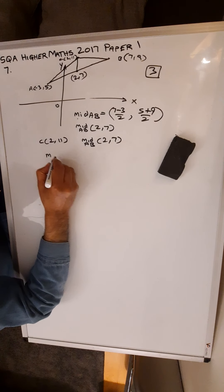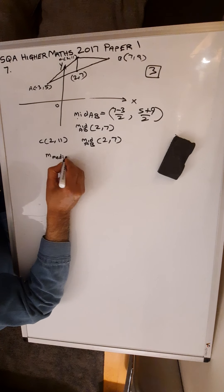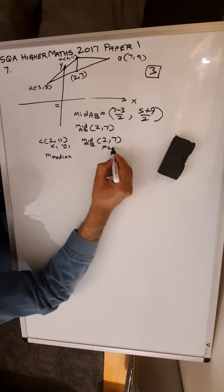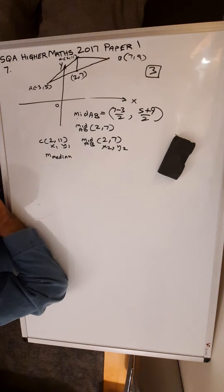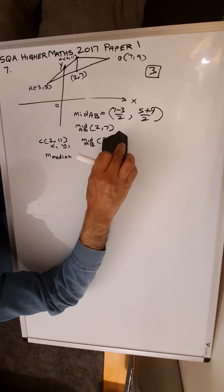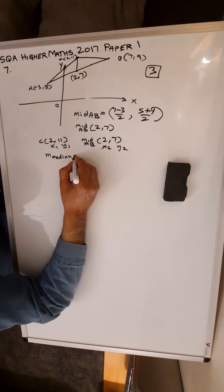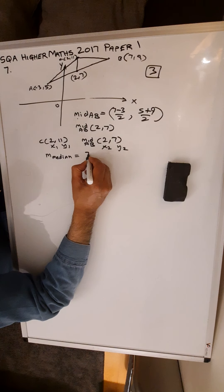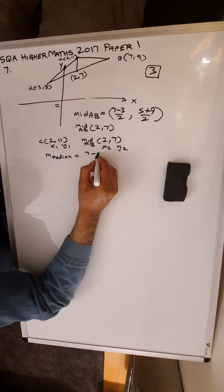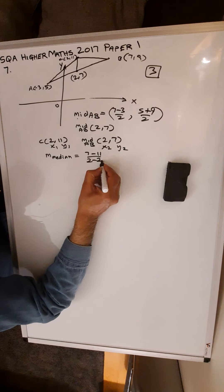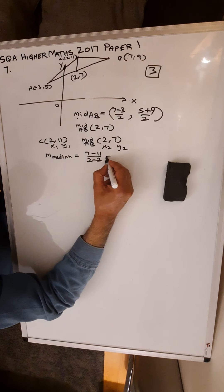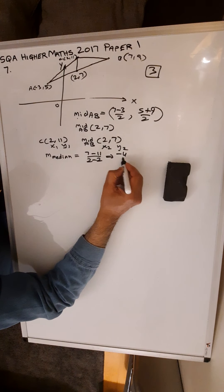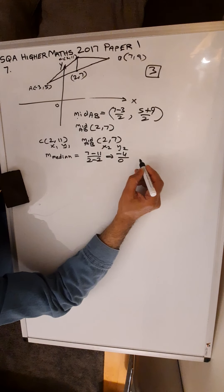So the gradient of the median would be... this we could call x1, y1, this would be x2, y2. You can actually see that the two x-coordinates are the same, so this is going to have an equation of the form x equals 2. But just to show what's happening here, so 7 minus 11 over 2 minus 2. So the gradient is undefined because you have a 0 in the denominator. So that gives you minus 4 over 0, gradient is undefined.